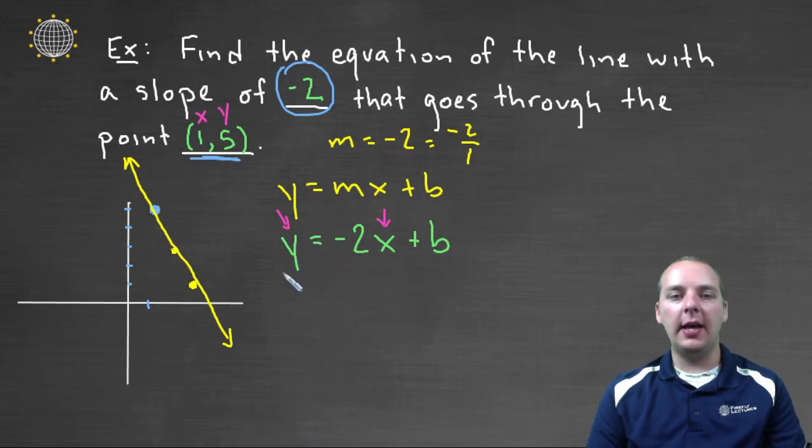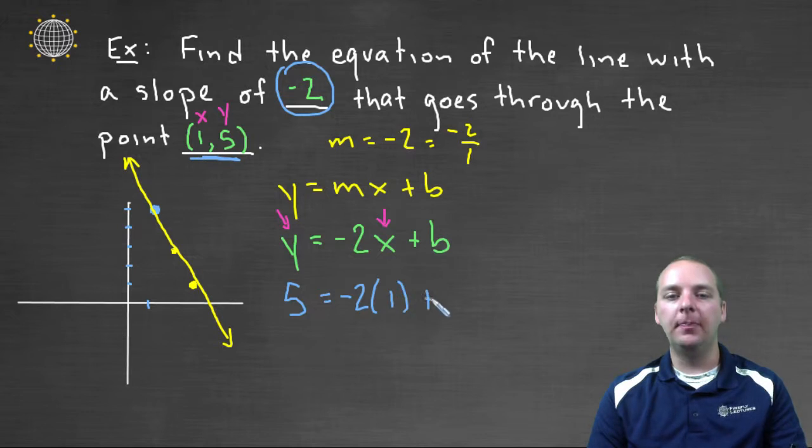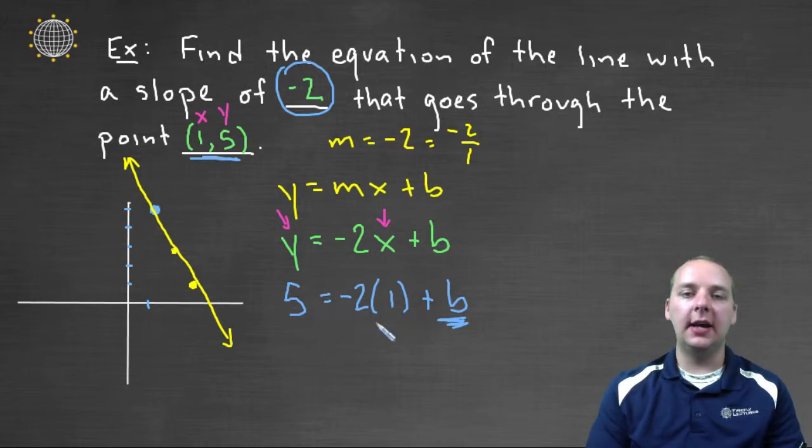We'll take the y out and substitute five. At the same time, we'll take x out and substitute one. And so in this updated equation, the only unknown now is the b. The b is the only thing we don't know. So negative two times one is negative two. If we add that to the left hand side, to the five, we'll get seven. So b equals seven.